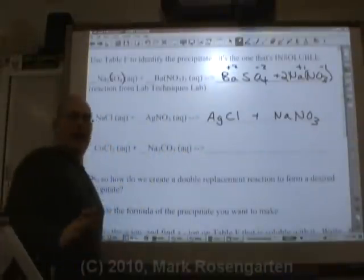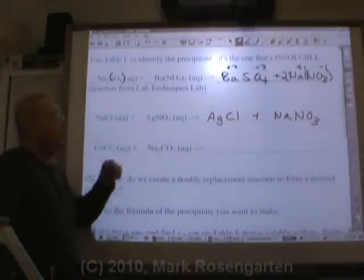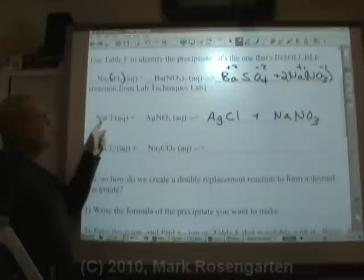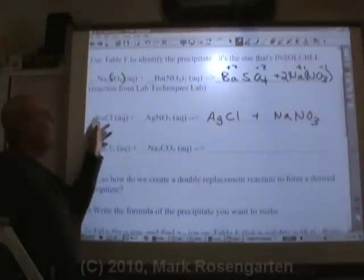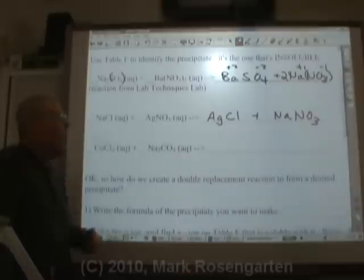Now I hear you ask there and you're screaming, well why isn't it Na with Ag and Cl with NO3? Remember, the one that's written first is the one with the positive charge. Positive and positive can't bond to each other, right? They repel, not attract.